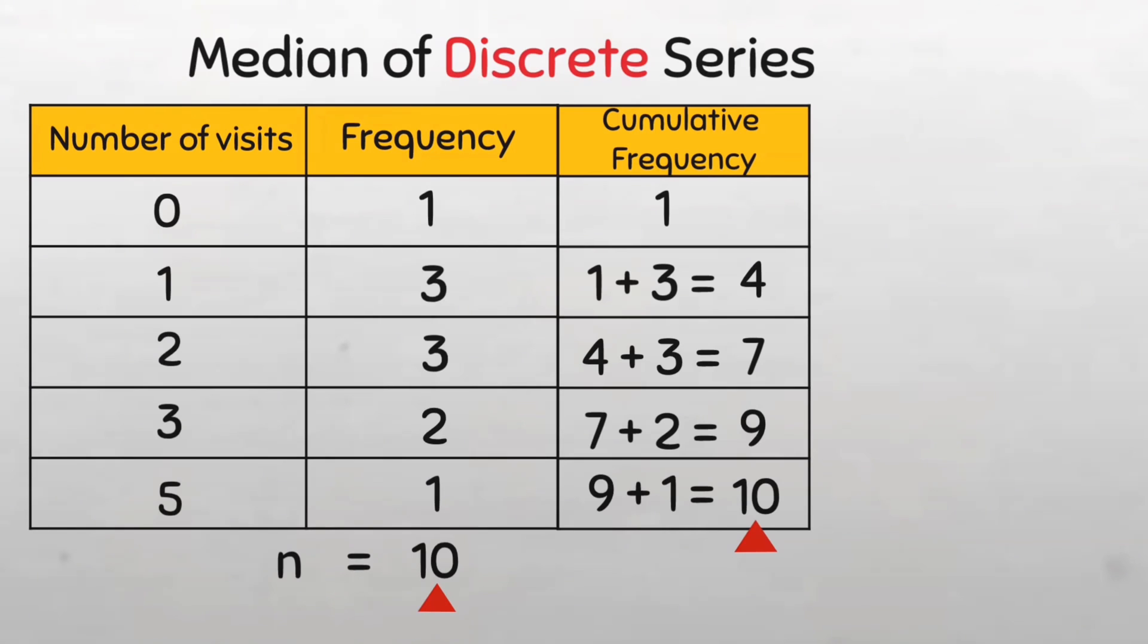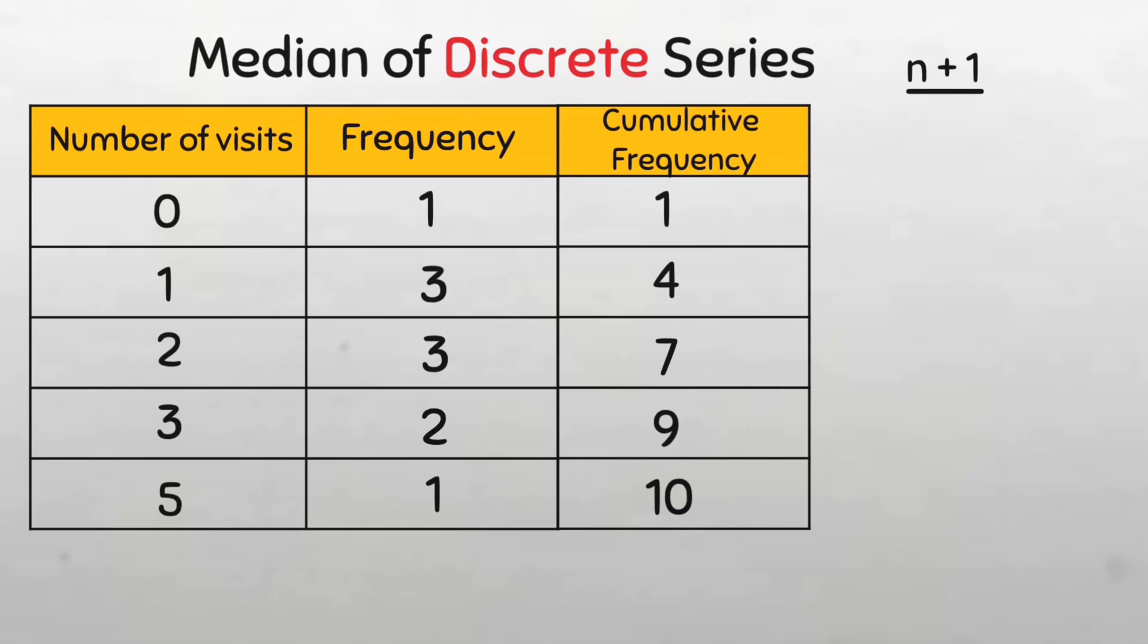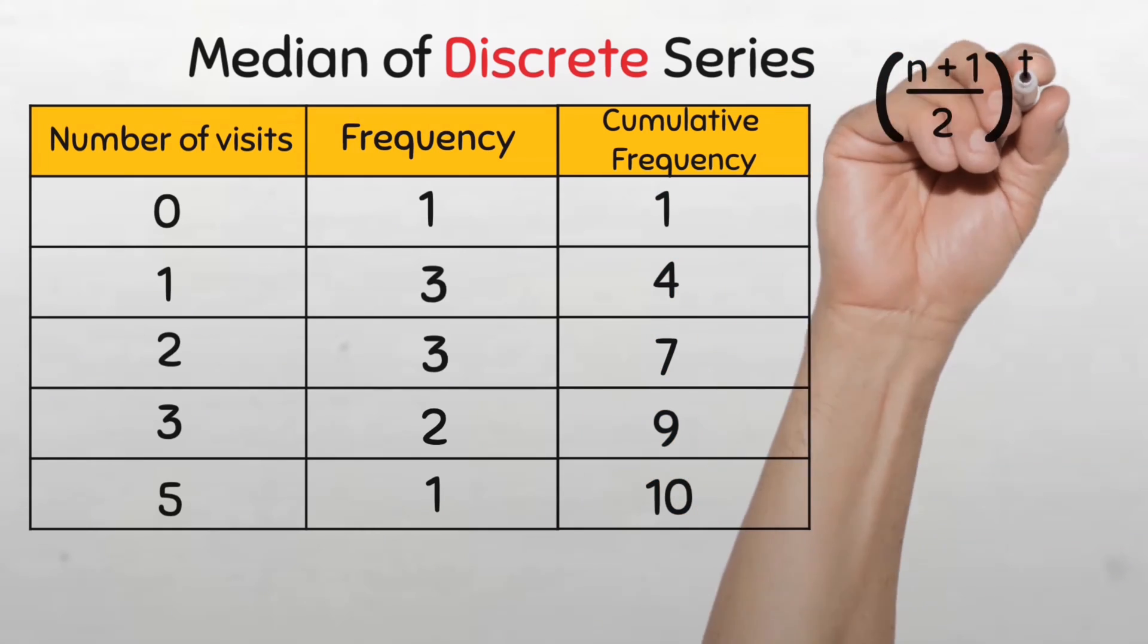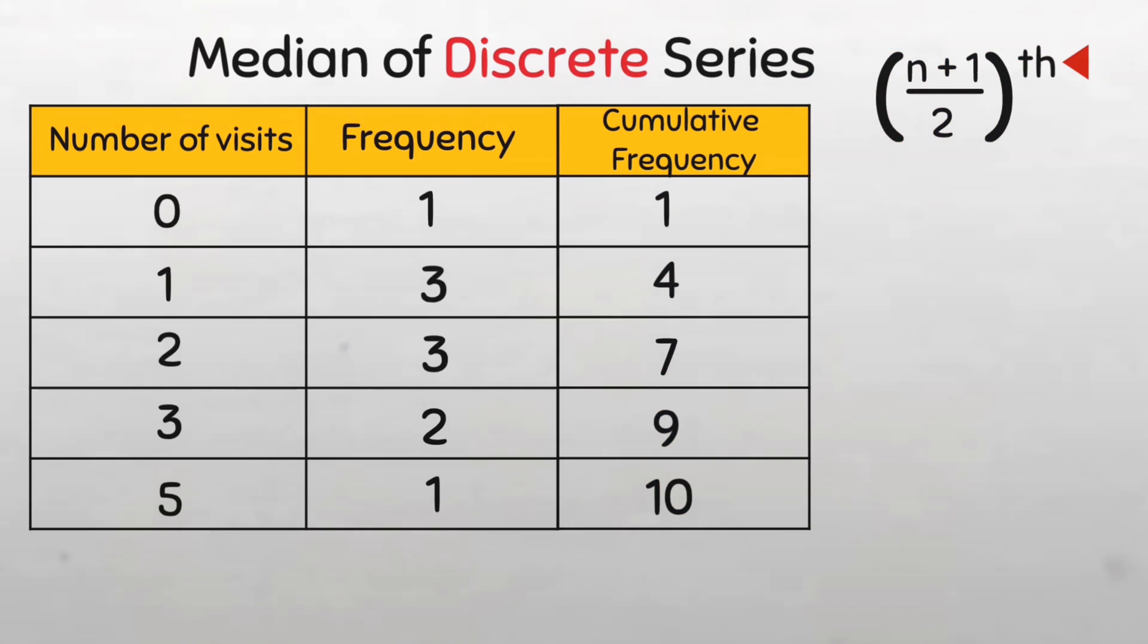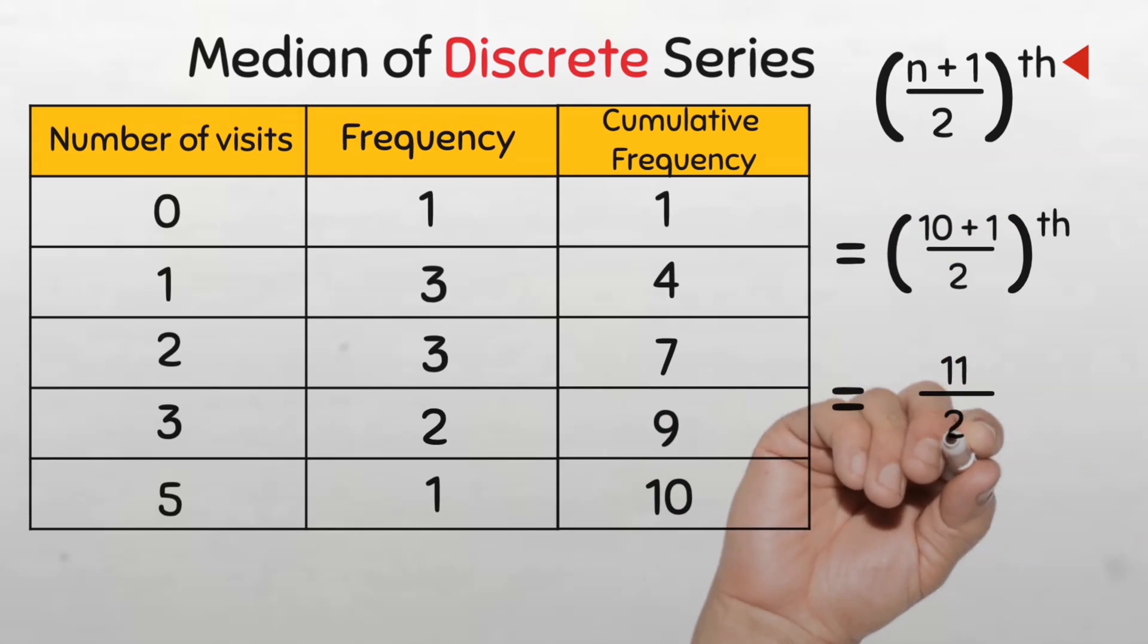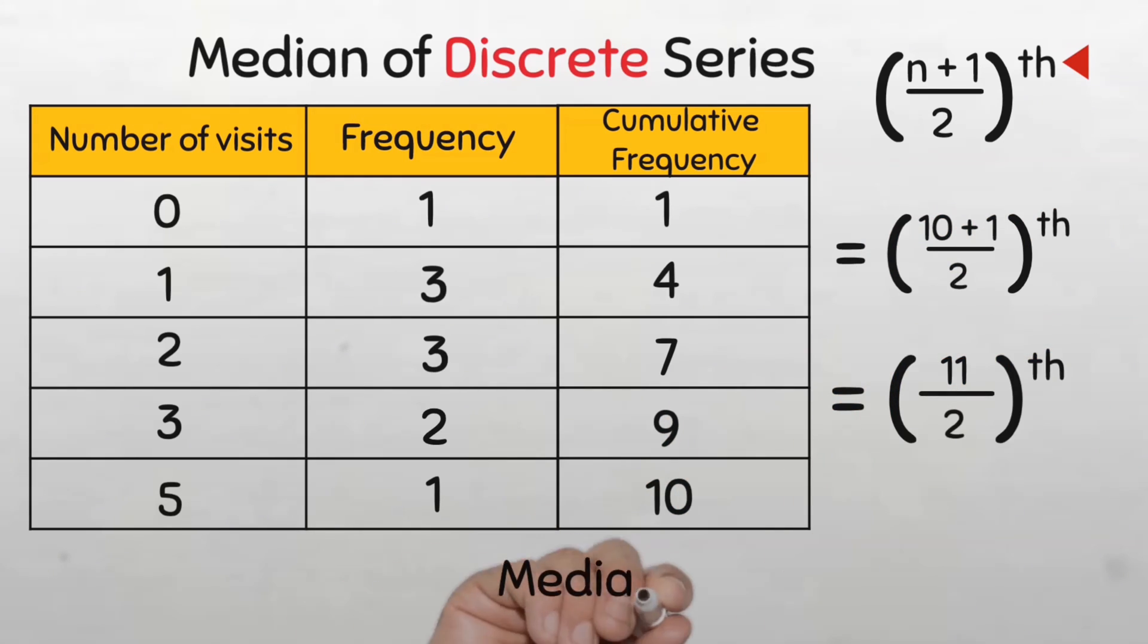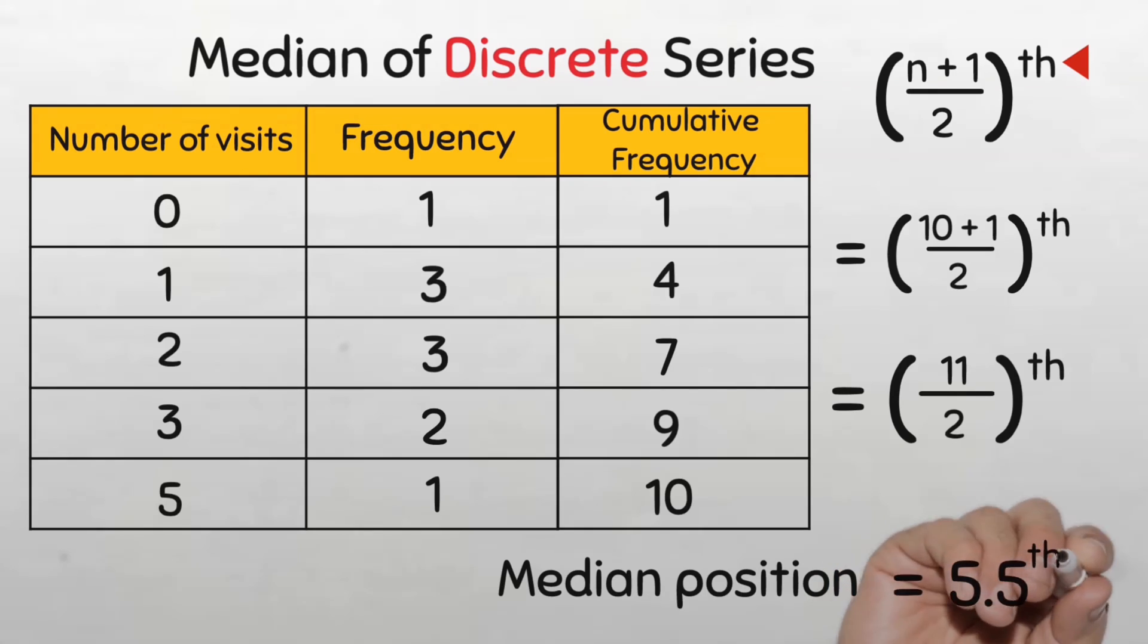The formula for locating the median position is (n+1)/2. Notice the th here because the formula just gives us the position. So the median position is (10+1)/2, that's 11/2, giving us the 5.5th position. Now we know the position of the median.